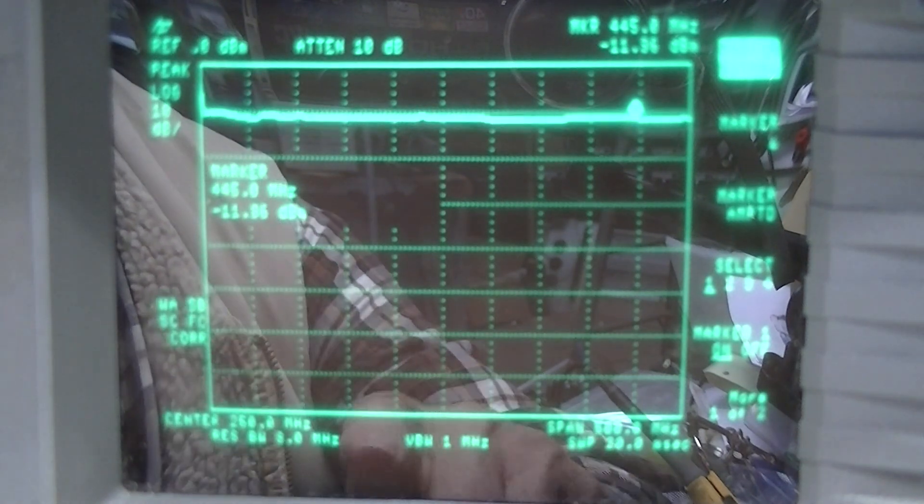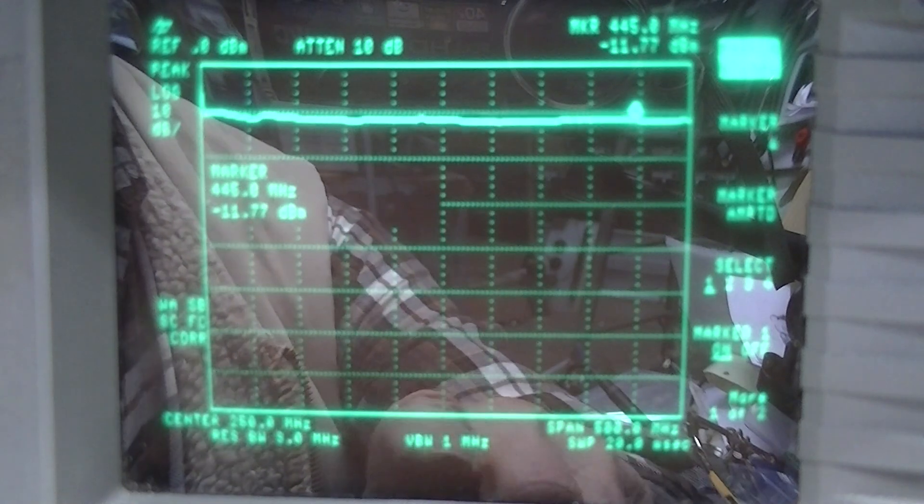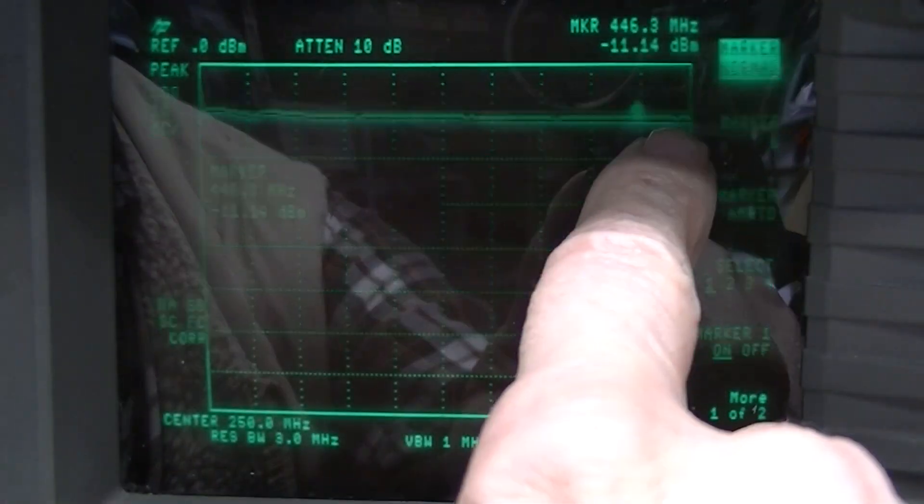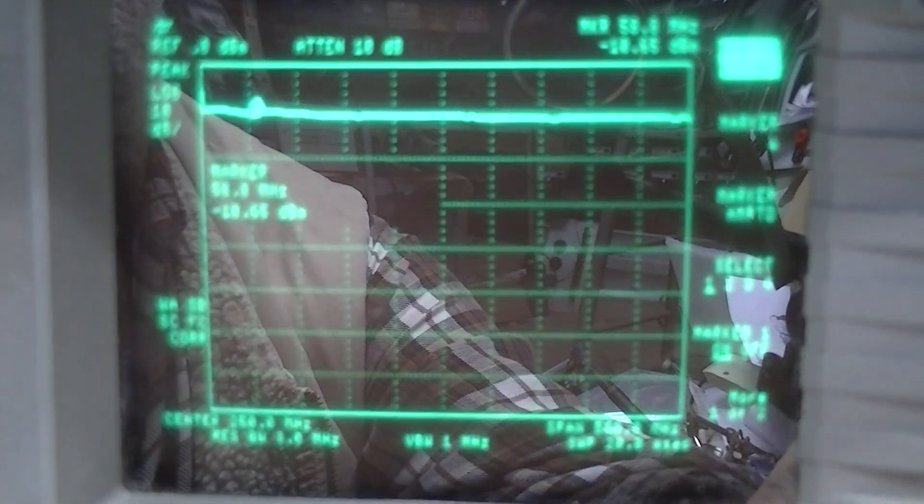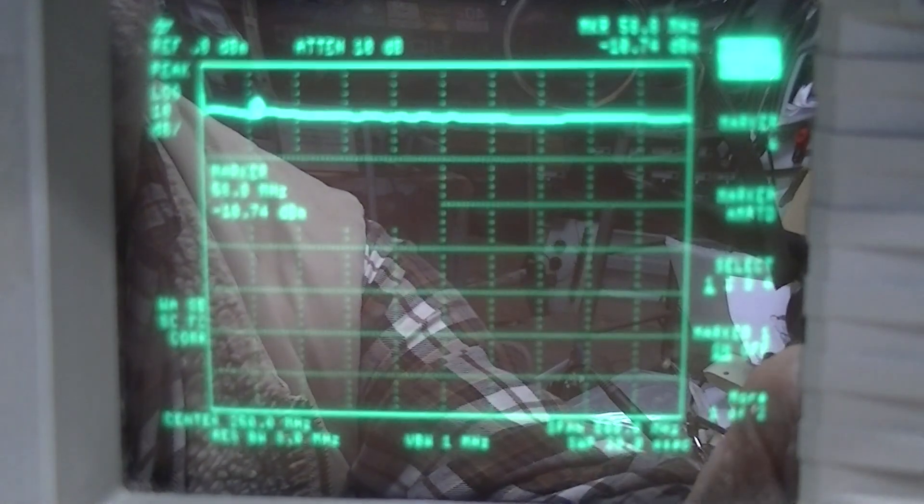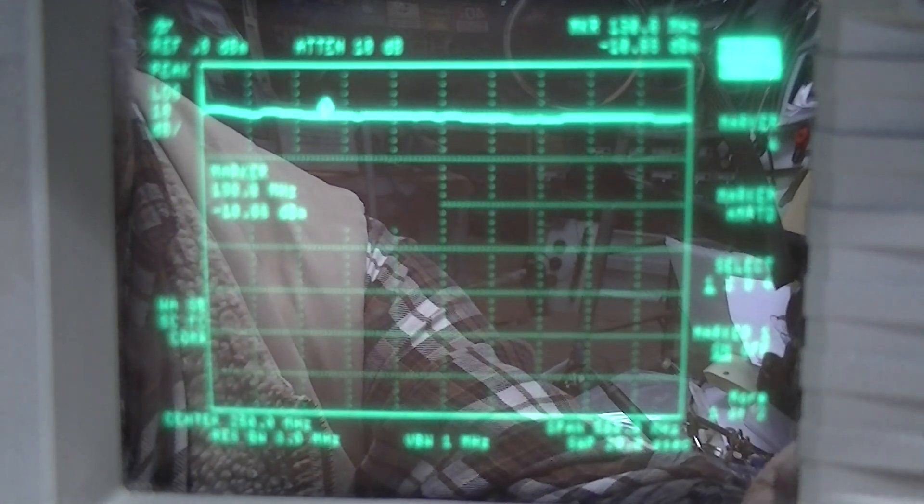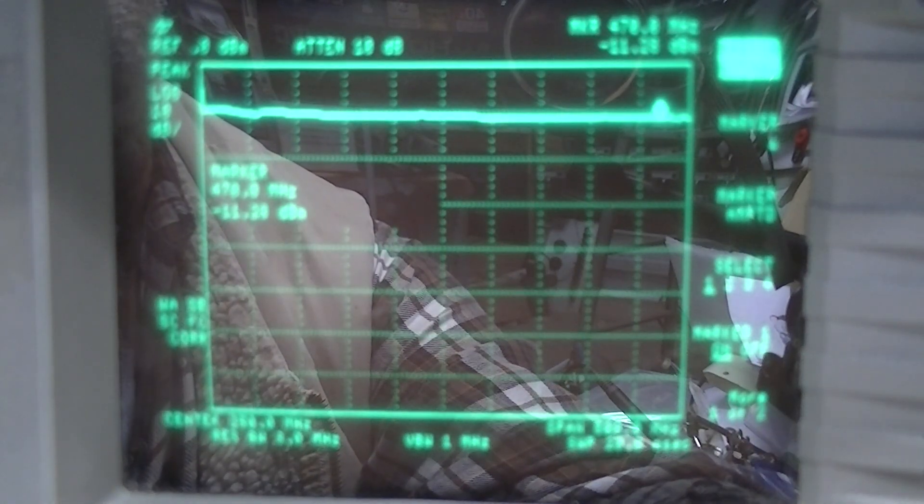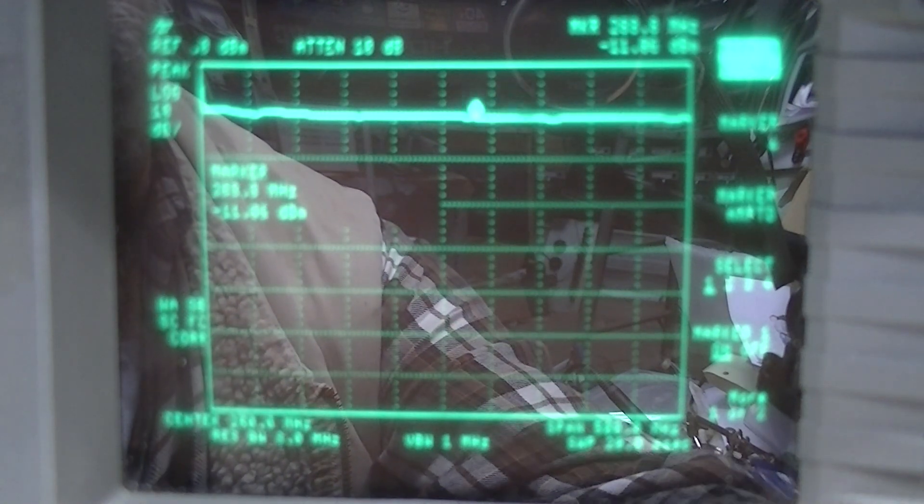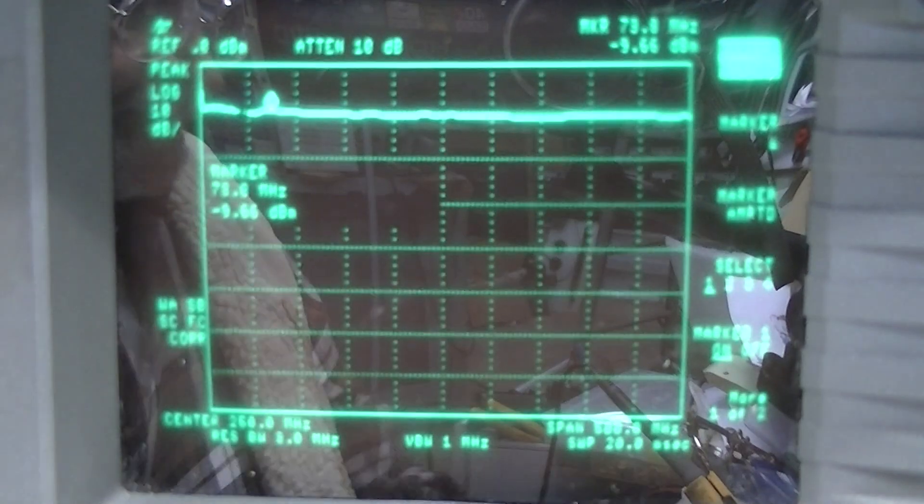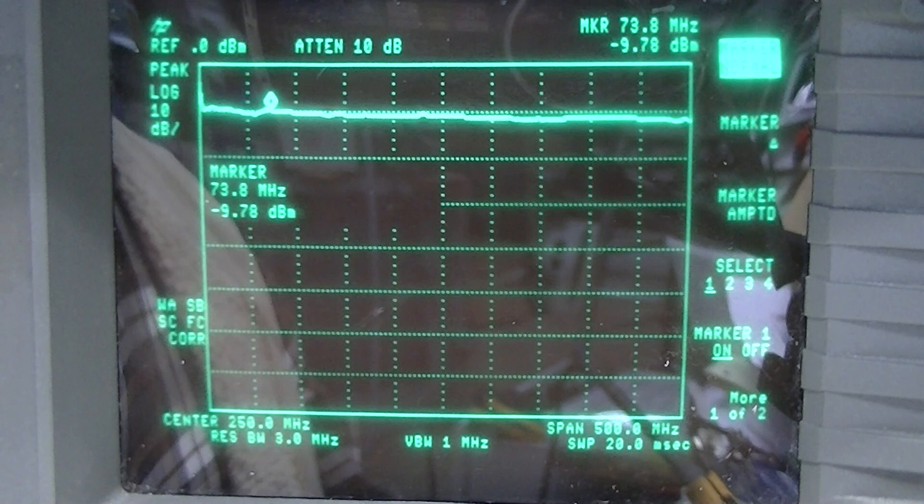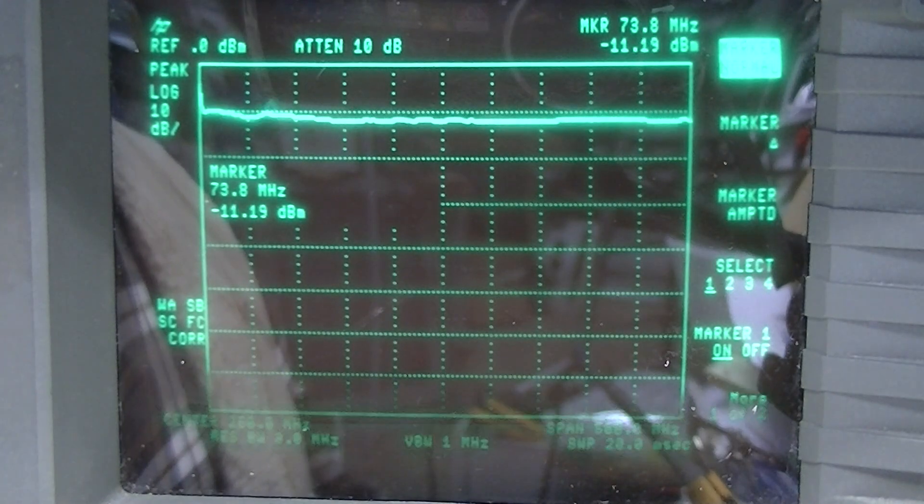Now we're back to no attenuation at all. Same span, ten to five hundred megahertz. Right here is almost eleven dB, down a little more than ten, back to eleven and a half. So it looks like the attenuator has an attenuation of thirty nine or forty decibels up to five hundred megahertz.